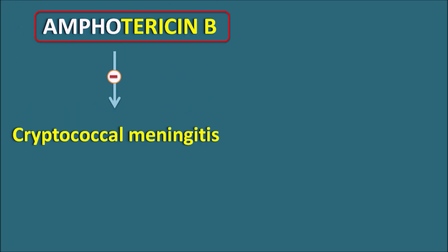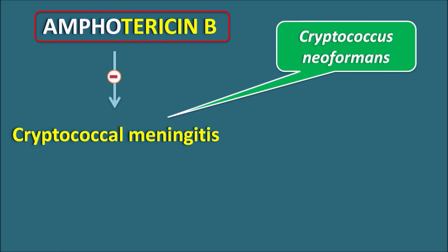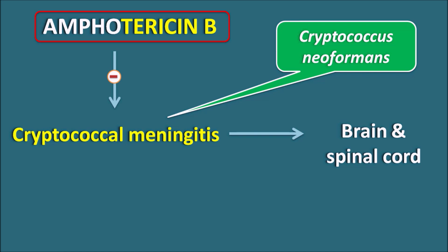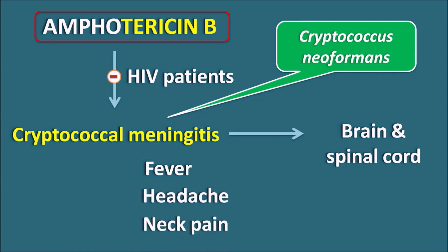One important clinical use of Amphotericin B is in the treatment of Cryptococcal meningitis, a fungal infection that affects the central nervous system, mainly produced by Cryptococcus neoformans, affecting the brain and spinal cord. This is particularly observed in immunocompromised patients — for instance, HIV patients. Cryptococcal meningitis produces symptoms like fever, headache, neck pain, mental confusion, and altered mental functionality. In such conditions, Amphotericin B can be used.